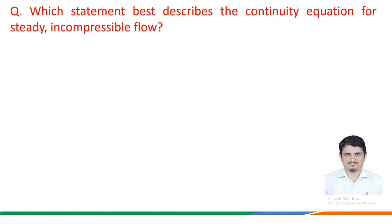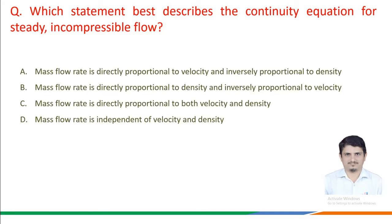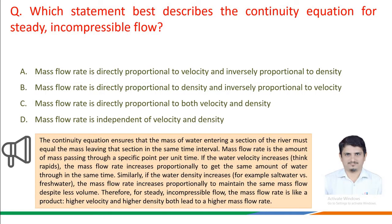The next question: which statement best describes the continuity equation for a steady incompressible flow? Options given are: A. Mass flow rate is directly proportional to velocity and inversely proportional to density. B. Mass flow rate is directly proportional to density and inversely proportional to velocity. C. Mass flow rate is directly proportional to both velocity and density. D. Mass flow rate is independent of velocity and density.